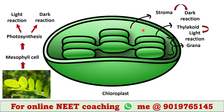Grana are found in stroma, which is an aqueous structure of the chloroplast. Photosynthesis occurs in two parts: light reaction and dark reaction. In the membrane of the thylakoid, light reaction occurs, whereas in the stroma, dark reaction occurs. The thylakoid membrane is a lipid bilayer membrane, just like the plasma membrane.